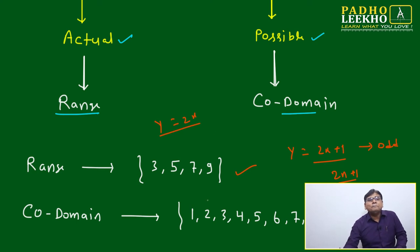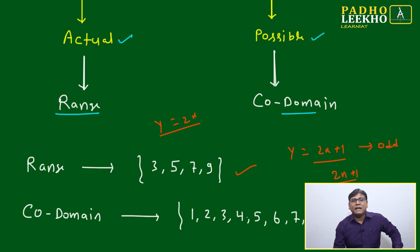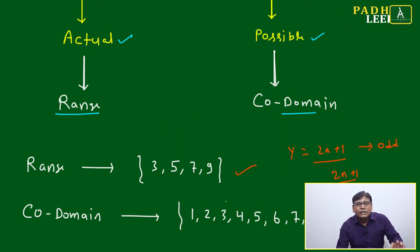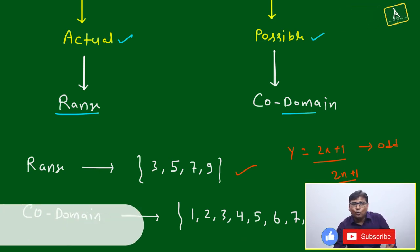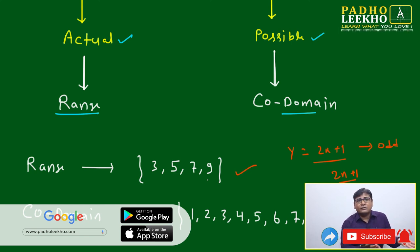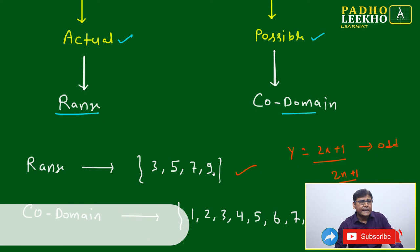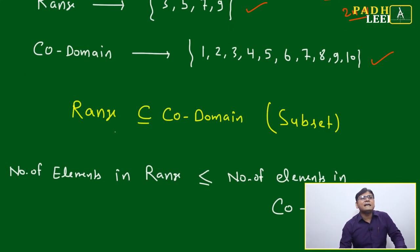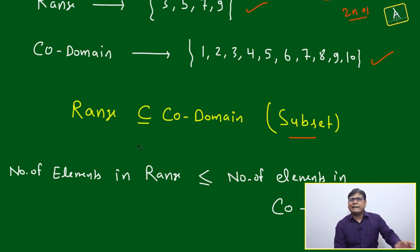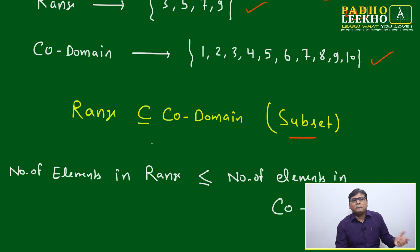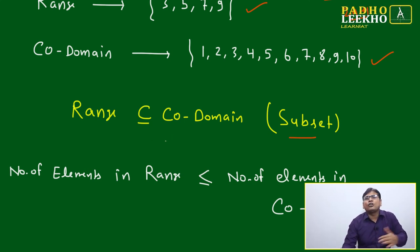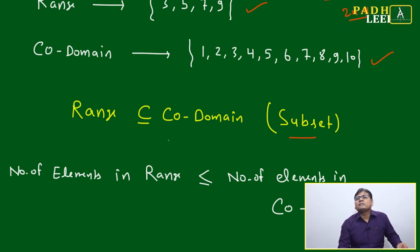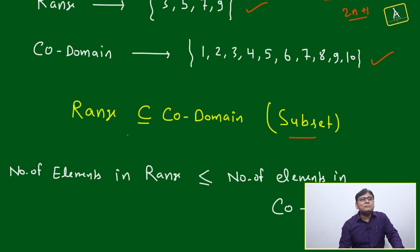If you change the function to y = 2x, then other values will also start to come and fall into the range. In the co-domain, all possible values that could appear if you change the input or the relation may be included, but in the range only what you actually get from the exact inputs given in set A is included. Based on this, we can say range will always be a subset of co-domain. More detailed sessions on set theory and functions are available at perolico.com.